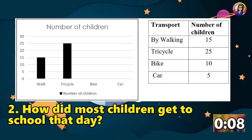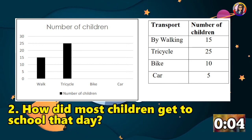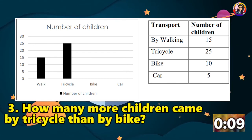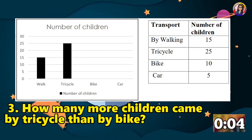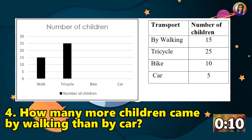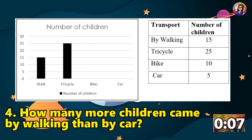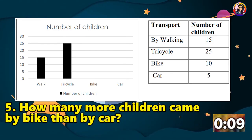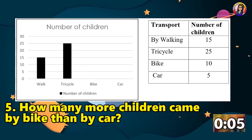Second, how did most children get to school that day? Third, how many more children came by tricycle than by bike? Fourth, how many more children came by bike than by car? Fifth, how many more children came by bike than by car?